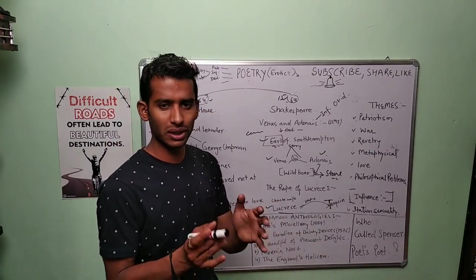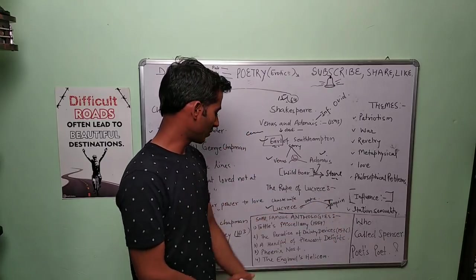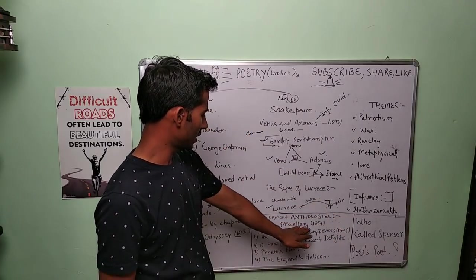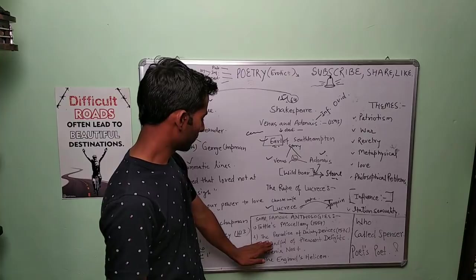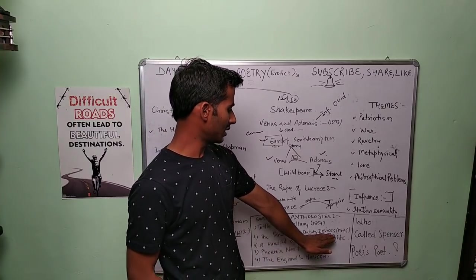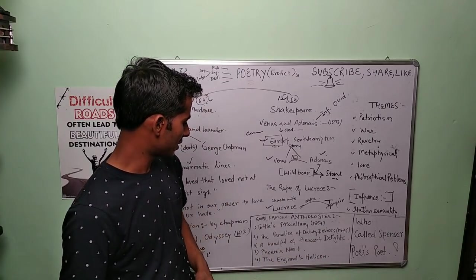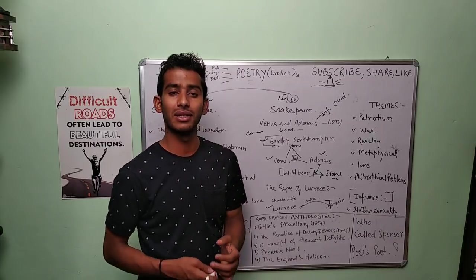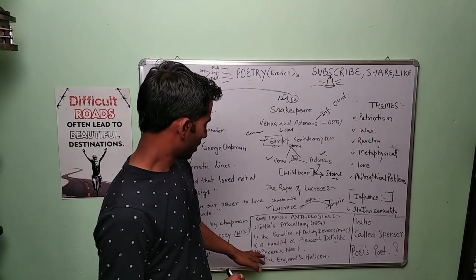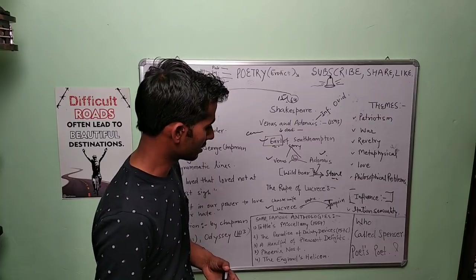Now, next one is some famous anthologies written at that point of time: First is Tottel's Miscellany in 1557, The Paradise of Dainty Devices in 1576, A Handful of Pleasant Delights, Phoenix Nest, and England's Helicon.